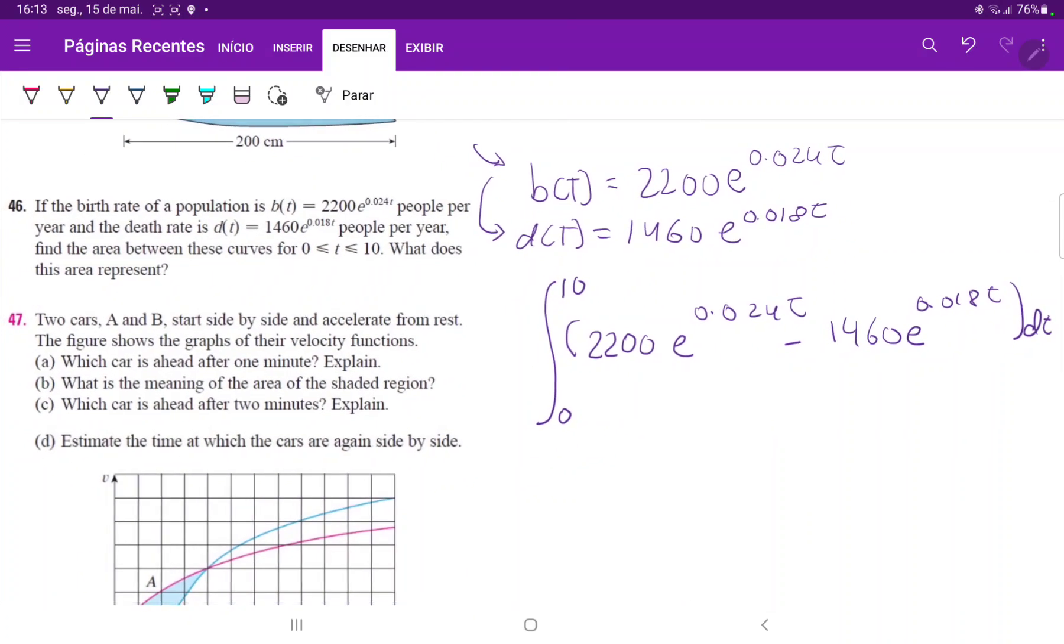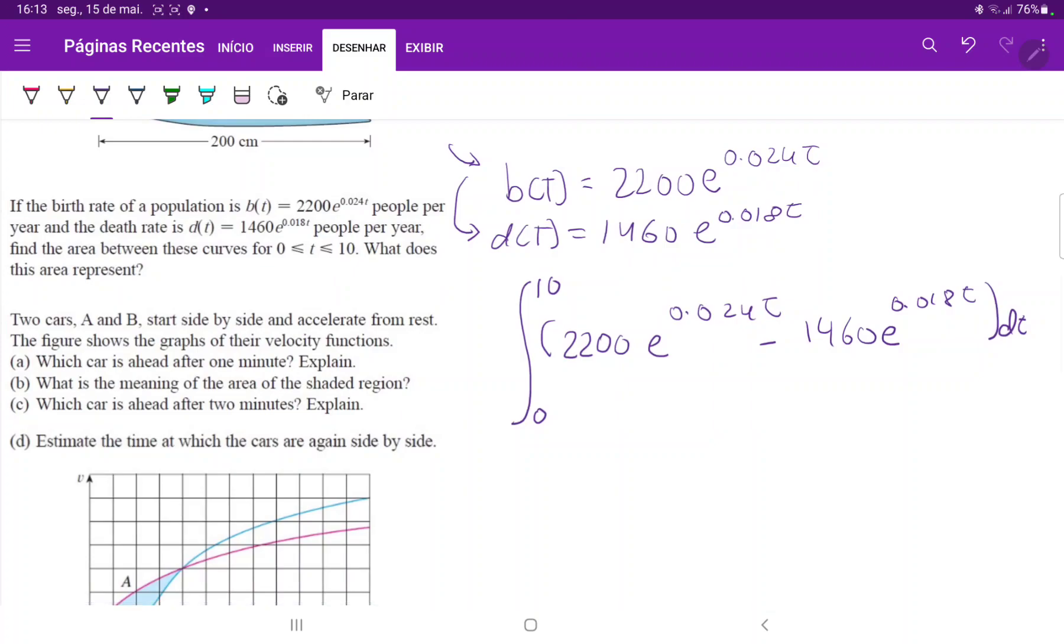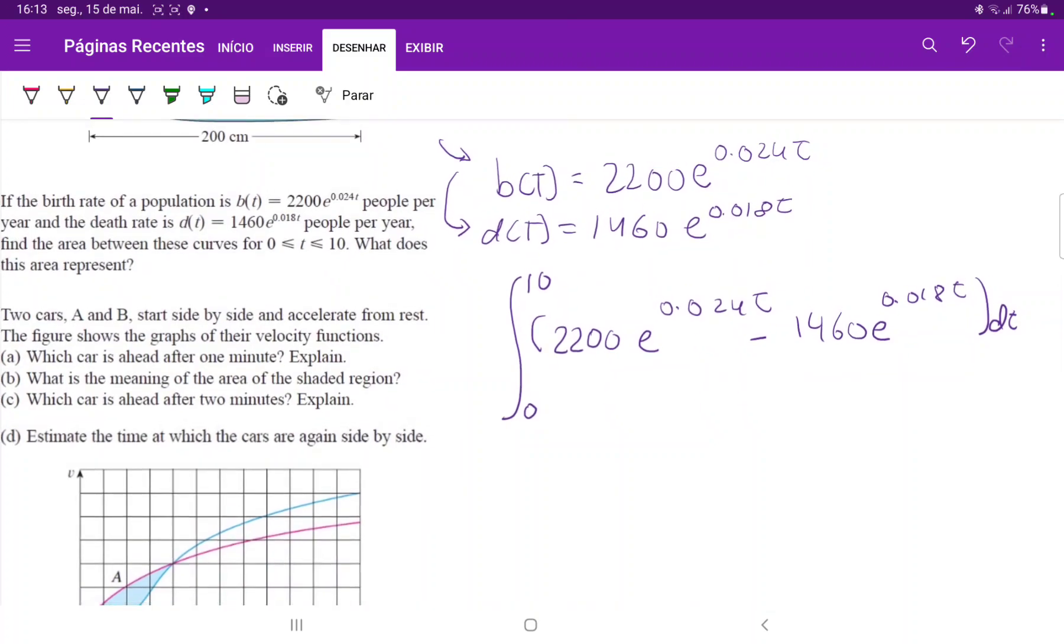And then it's asking, what does the area represent? So let us first take the integral, and then we'll talk about what the area means. So we have 2200e to the 0.024t divided by 0.024 minus 1460e to the 0.018t divided by 0.018,